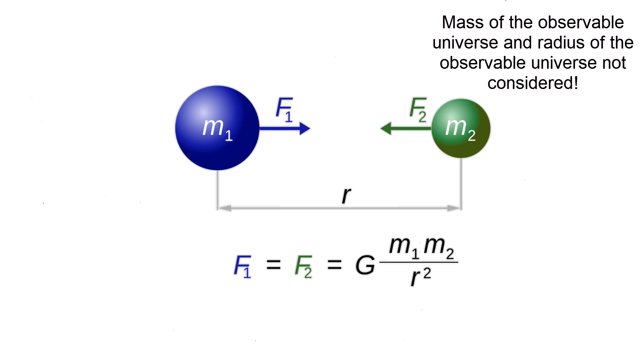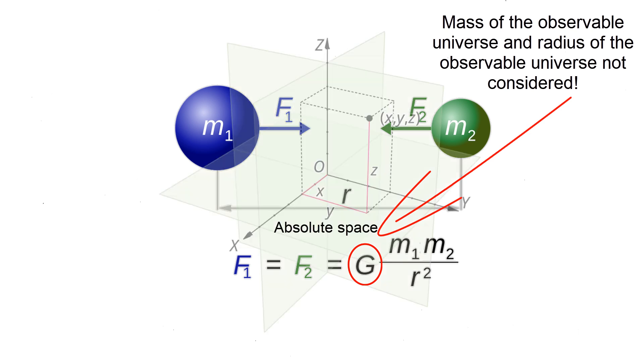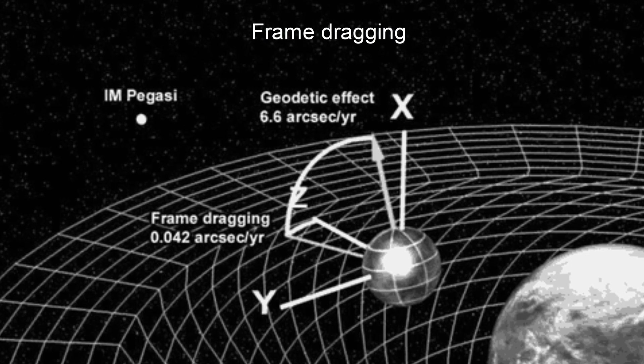The only way this can be true is through the Newtonian gravitational constant, which together with the choice of an inertial absolute space frame, both constitute the arbitrary choices of Newton.